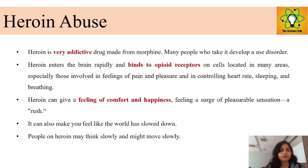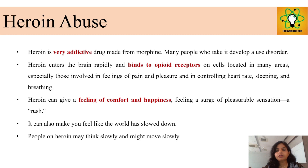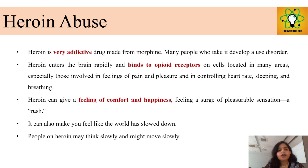Heroin is a very addictive drug. As mentioned, it is three times more potent than morphine, making it highly addictive and causing mainly mental disorders. Heroin enters the brain and binds to opioid receptors located in certain areas of the brain, causing uncontrollable imbalance in heart rate, sleeping disorders, and breathing. Heroin can also give a feeling of comfort and happiness.